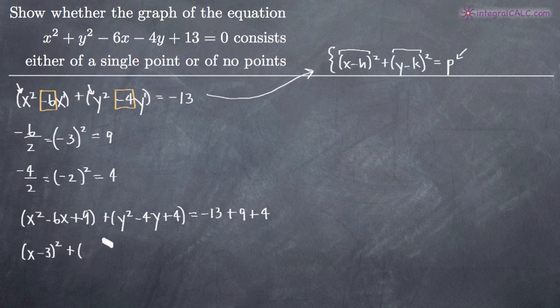And now this y squared minus 4y plus 4 can be factored into y minus 2 times y minus 2, which means we can write it as y minus 2 squared. Then over here on the right hand side, negative 13 plus 9 plus 4 is 0, so we end up with 0 on the right hand side.